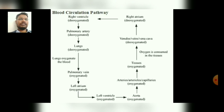Starting from the right ventricle, which carries the deoxygenated blood — the right ventricle pumps the blood through the pulmonary artery, where the deoxygenated blood reaches the lungs. The lungs help in the exchange of gases and ultimately convert the deoxygenated blood into oxygenated blood.